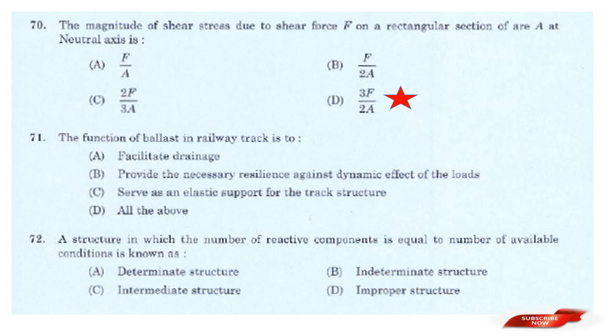Question: The function of a ballast in the railway track is to? Options: Provide the necessary resilience against the dynamic effect of loads; Serve as an elastic support for the track structures; All the above. Answer: Option D — All the above.